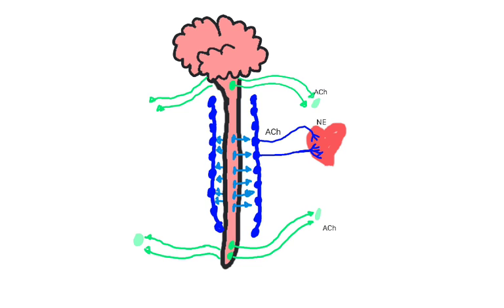These cells connect to the target organs and typically release acetylcholine, which can bind to muscarinic acetylcholine receptors on the targets.